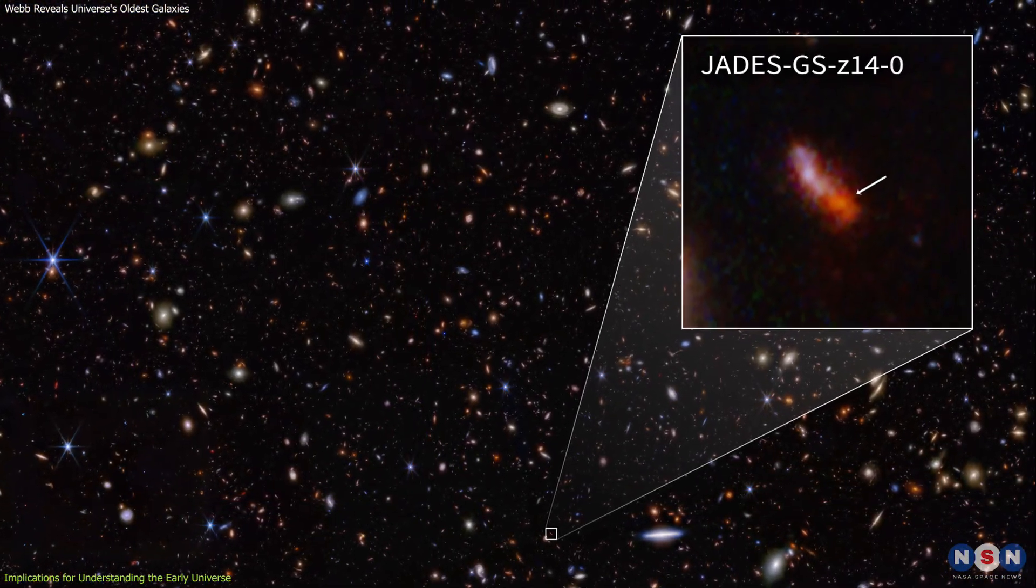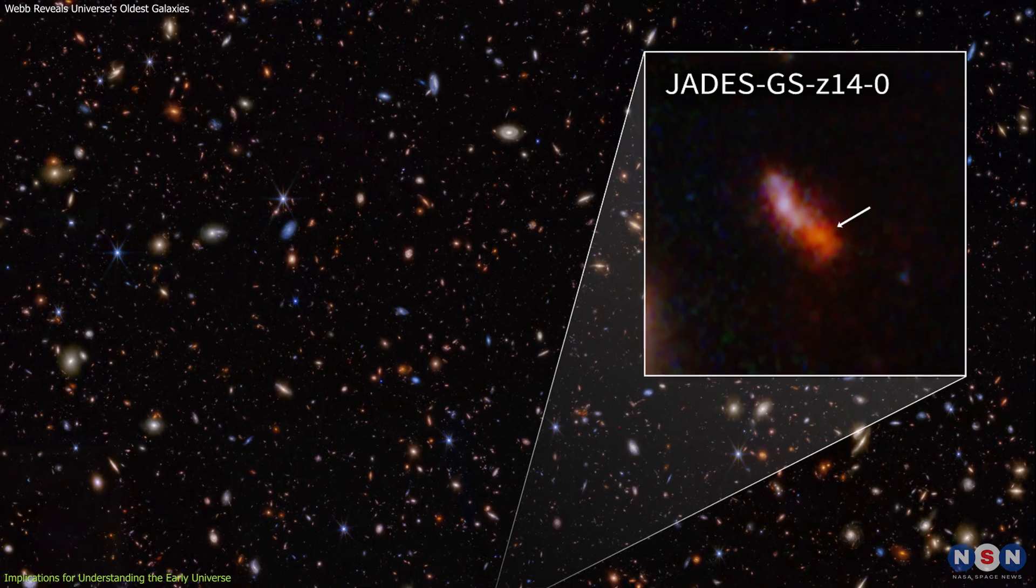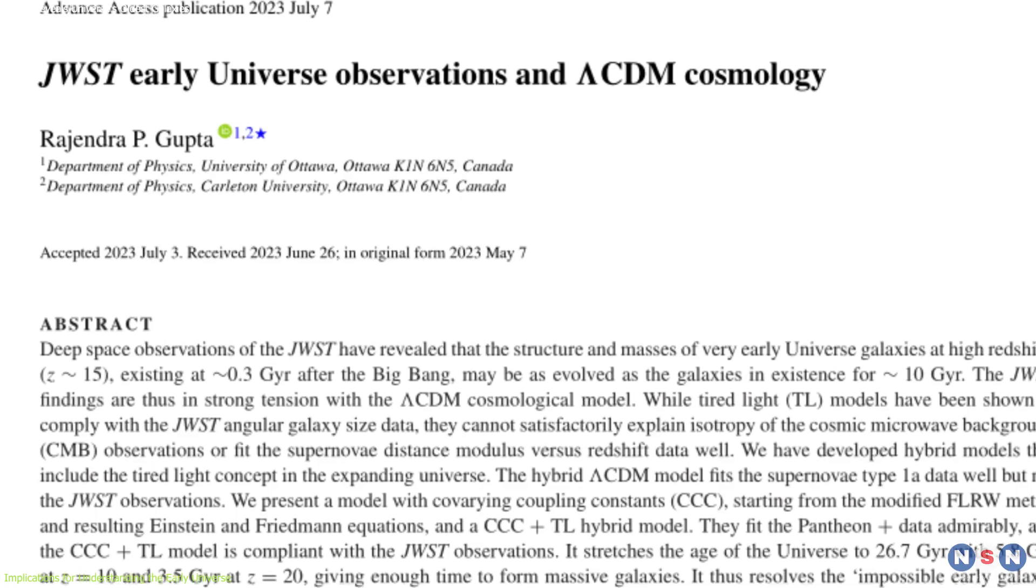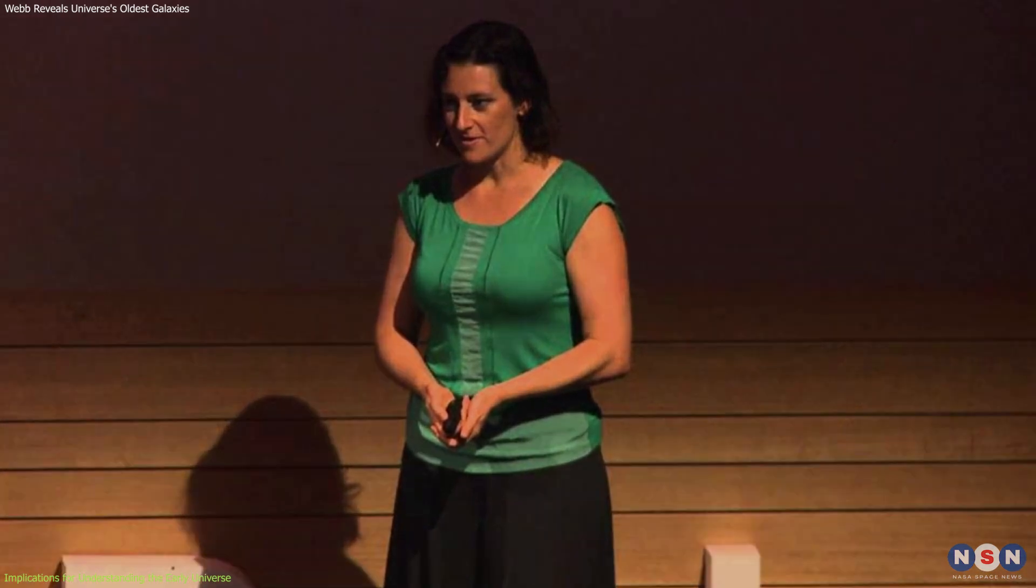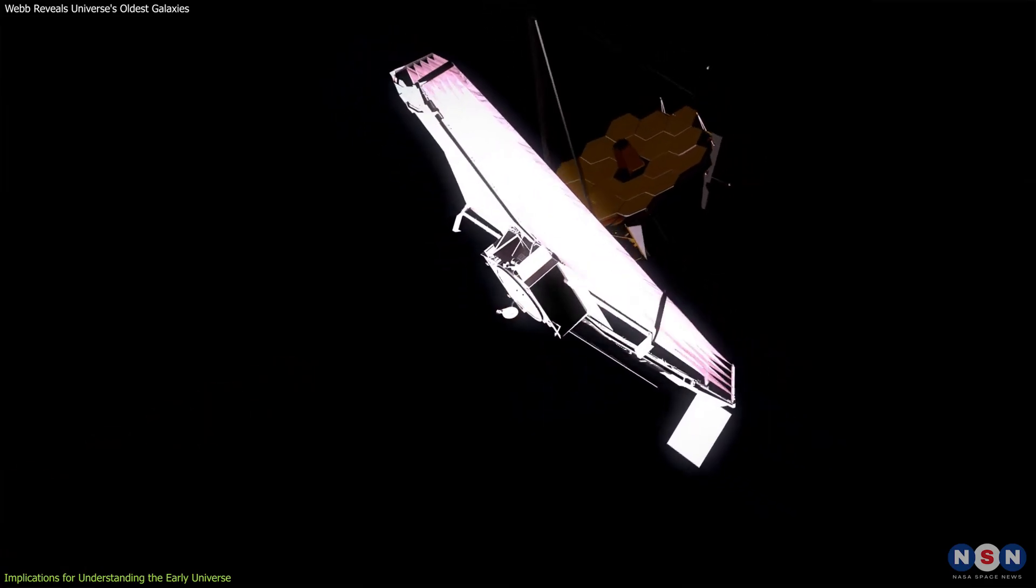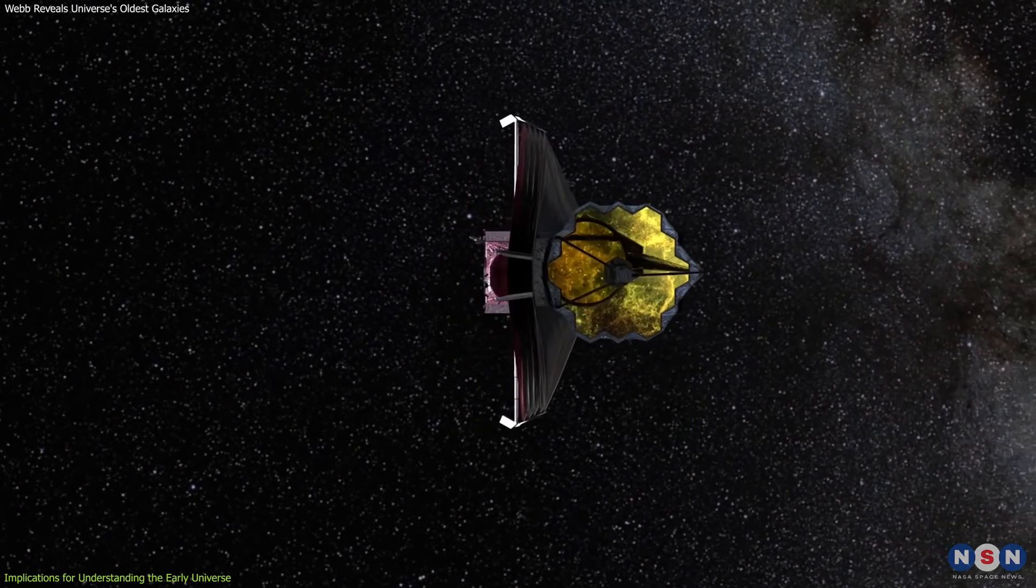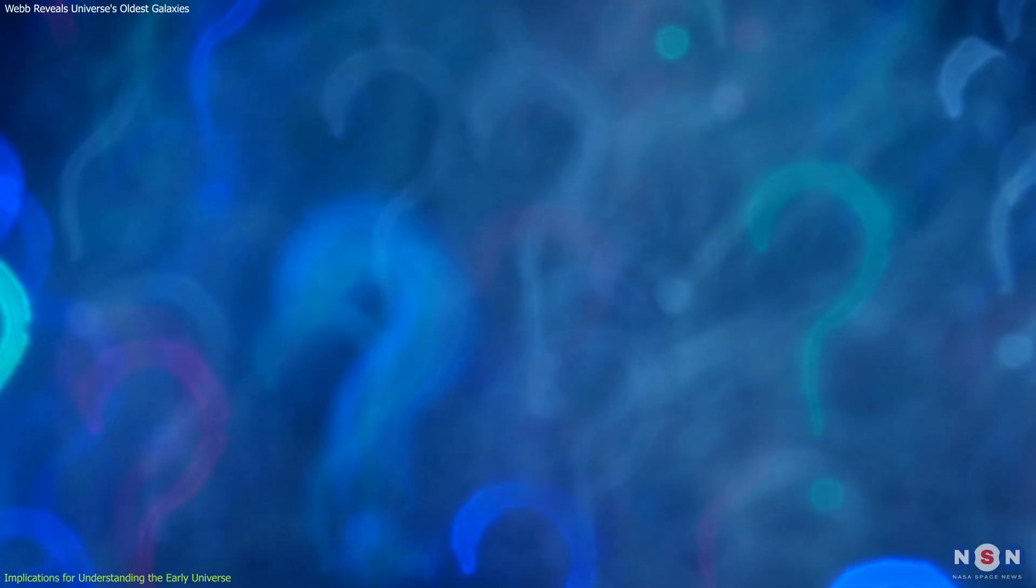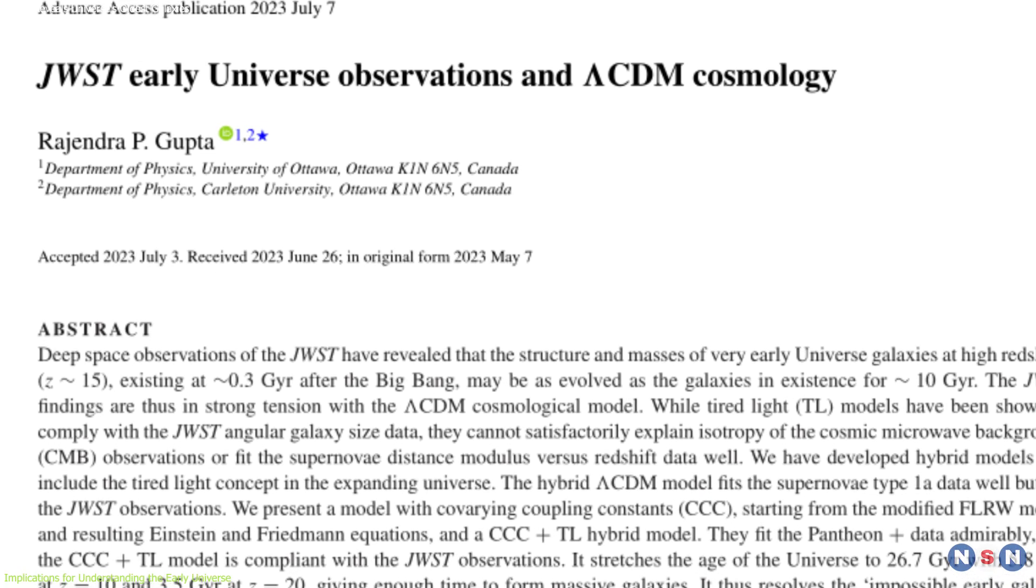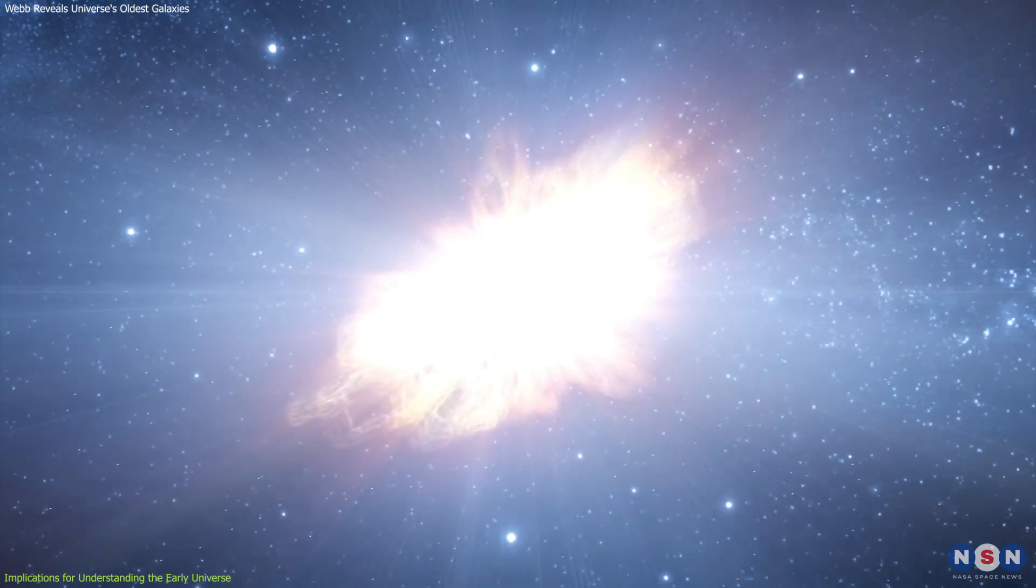While the mature galaxies observed by Webb support the idea of rapid galaxy formation, the scientific community remains cautious about Gupta's radical theory. Experts like Dr. Luke Barnes and Professor Tamara Davis emphasize the need for extraordinary evidence to support such extraordinary claims. They argue that while Webb's observations are puzzling, they do not necessarily imply a much older universe. Scientific skepticism is essential in this context. Gupta's theory needs to be tested against a broad range of cosmological data, not just supernova data, to gain acceptance.